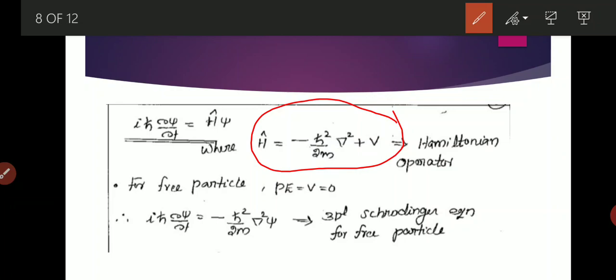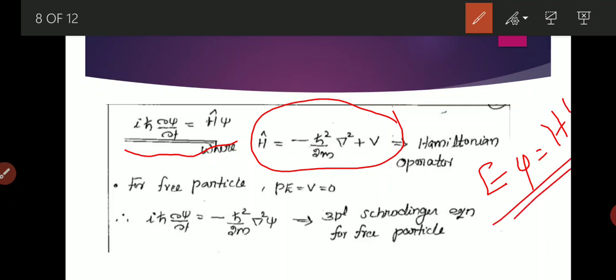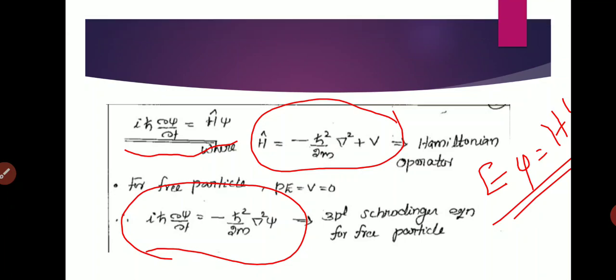Using the Hamiltonian operator, the equation can be written compactly as iħ · ∂ψ/∂t = Ĥψ, or Eψ = Ĥψ, where iħ · ∂/∂t is the energy operator E. For a free particle, the potential energy V = 0, so the three-dimensional Schrödinger equation becomes: iħ · ∂ψ/∂t = −(ħ²/2m)·∇²ψ.